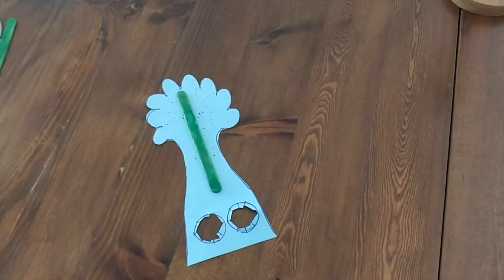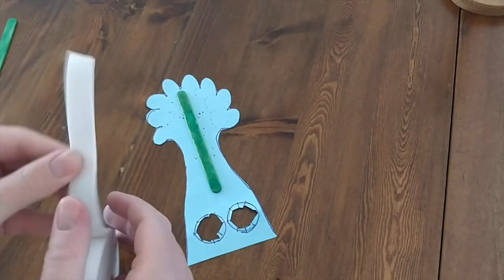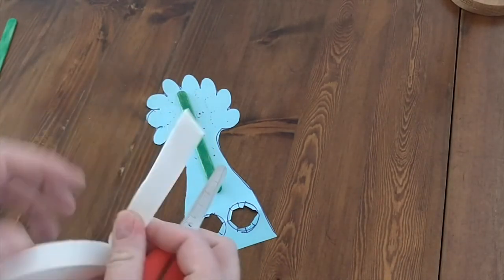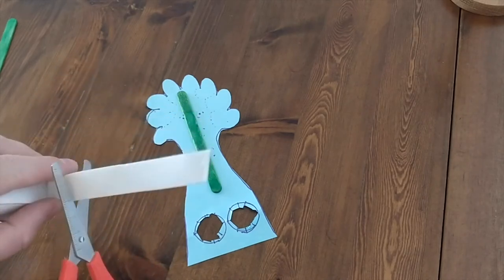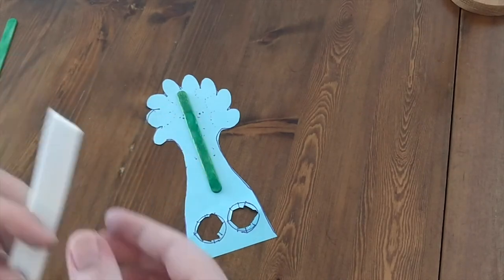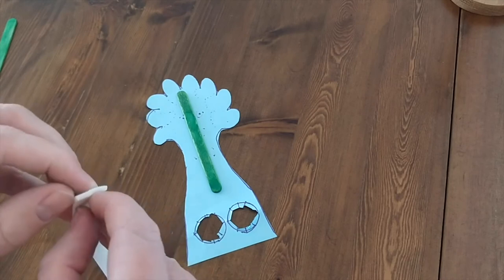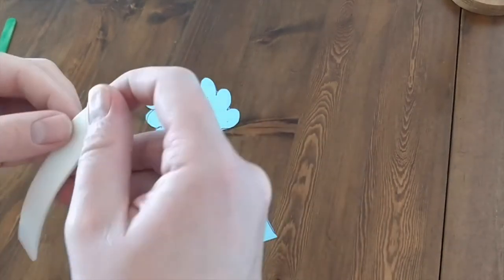Another option here if you want to make your puppet really secure is to add a bit of a backbone. So what I've done is taken this green lollipop stick and stuck it to the back of my puppet. Now I've used double sided sticky tape but you could use a Pritt stick or any sellotape at all.